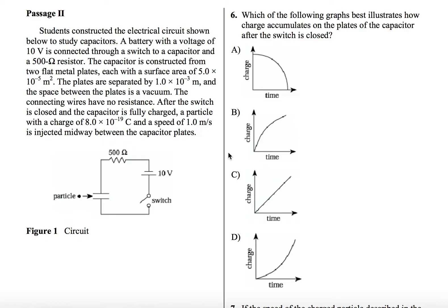The connecting wires have no resistance. After the switch is closed and the capacitor is fully charged, a particle with a charge of 8 times 10 to the minus 19 coulombs and a speed of 1 meter per second is injected midway between the capacitor plates.